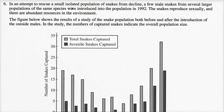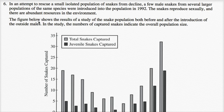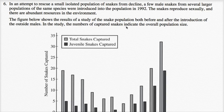In an attempt to rescue a small, isolated population of snakes from decline, a few male snakes from several larger populations of the same species were introduced into the population in 1992. The snakes reproduce sexually, and there are abundant resources in the environment. The figure below shows the results of a study both before and after the introduction of the outside males, where the numbers of captured snakes indicates the overall population size.